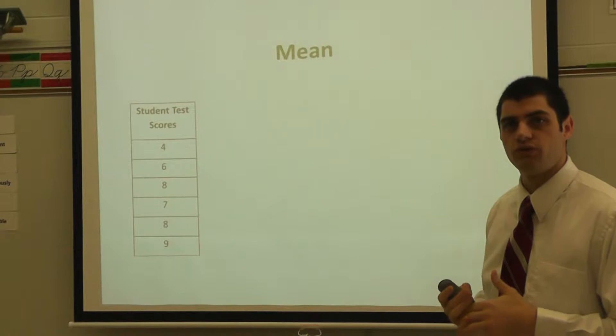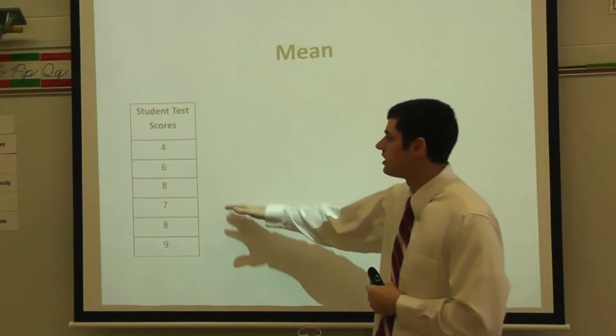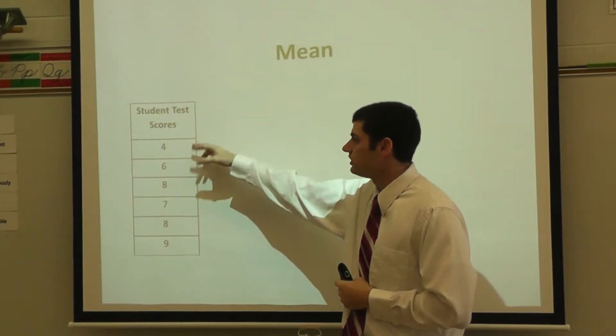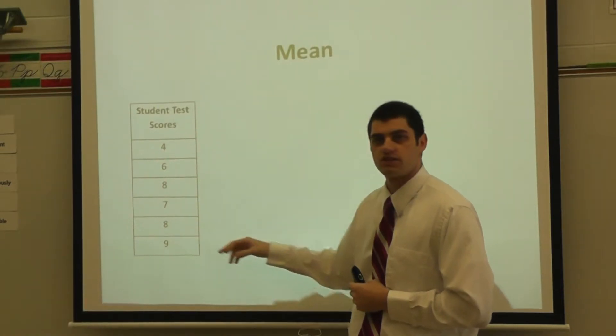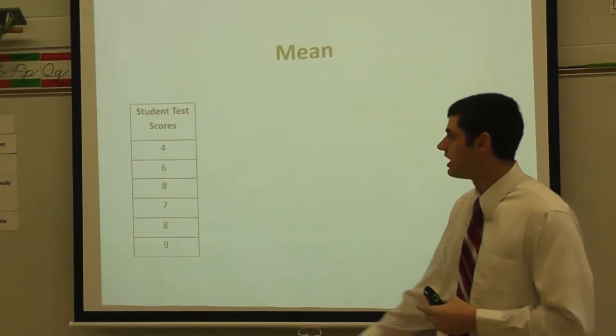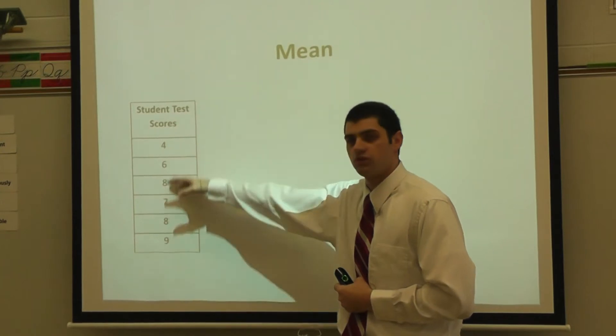So the first thing to do when you look at the mean is you're going to look at the total number of scores that you have. I have 1, 2, 3, 4, 5, 6. There were 6 tests that I took and here is the point value of each one of the tests.